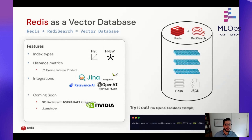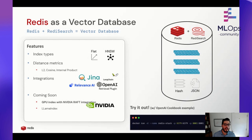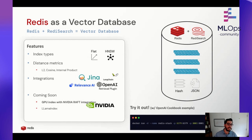You probably heard from Harrison Chase earlier, or if you're going to the MLS meetup in San Francisco today, you'll hear more from Sebastian from FastAPI, Harrison, and Simbo from FeatureForm about all the cool things they're doing. We also have Relevance AI, which allows you to have a GUI on top of your vector database. Really exciting is our GPU index coming out with NVIDIA — we're working directly with them to put your index on GPU.